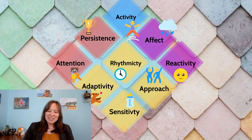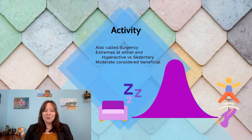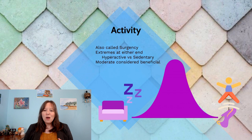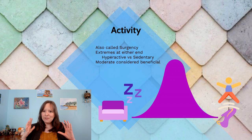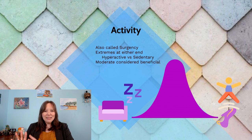Regarding activity, this can also be called surgency, like in the Rothbart approach — those two constructs heavily overlap. In infants and children there is a spectrum in which activity can be displayed. At one extreme, we have someone literally bouncing around — an infant bouncing in a jolly jumper all day, or a child constantly running around. All three-year-olds tend to have more energy than their parents, but sometimes you may have a three-year-old above average in activity level.